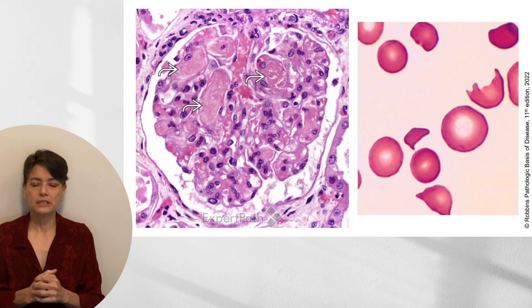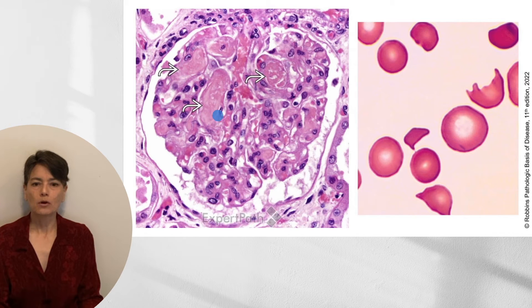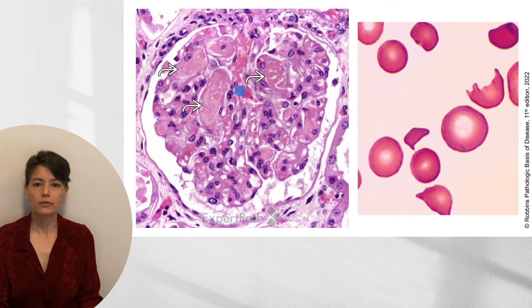Here you can see a beautiful glomerulus from Elsevier's Expert Path. In the capillary, instead of discrete red blood cells, we see an amorphous pink material — this is fibrin. These are fibrin microthrombi in the capillaries. As red blood cells try to push their way through this fibrin mesh, little bits are torn off, forming schistocytes, which is what we'll see on the peripheral smear.